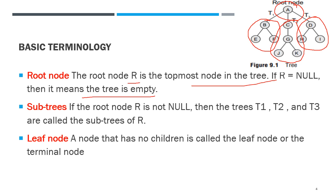What is a leaf node? A node that has no children is called a leaf node or terminal node. That is, there is no further branching from it. In this example, nodes with values E, F, J, K, H, and I are the leaf nodes or terminal nodes, as they have no children.